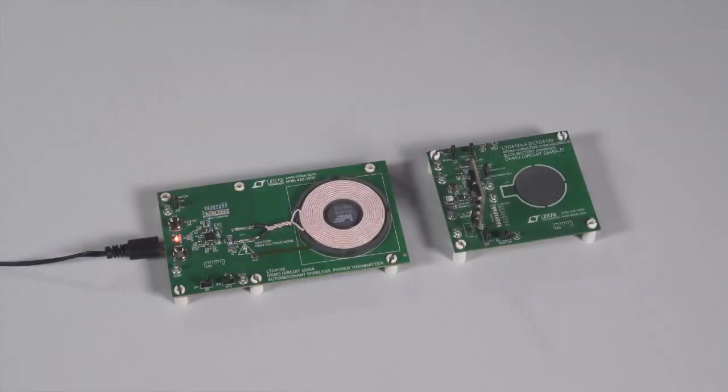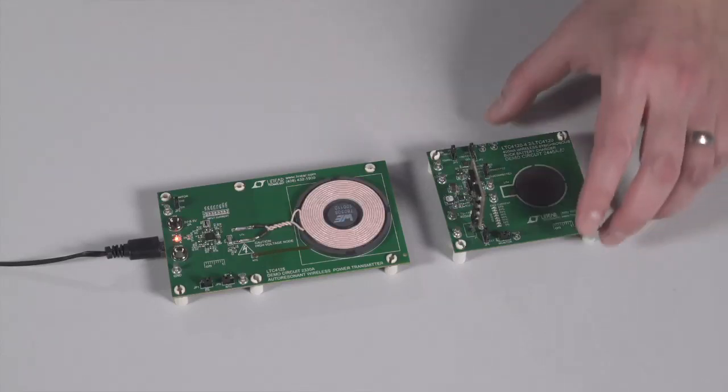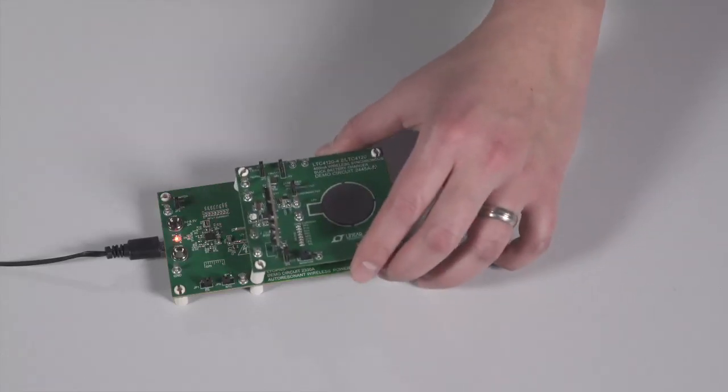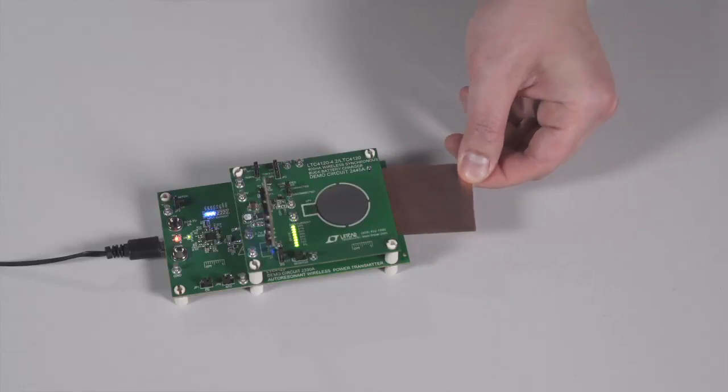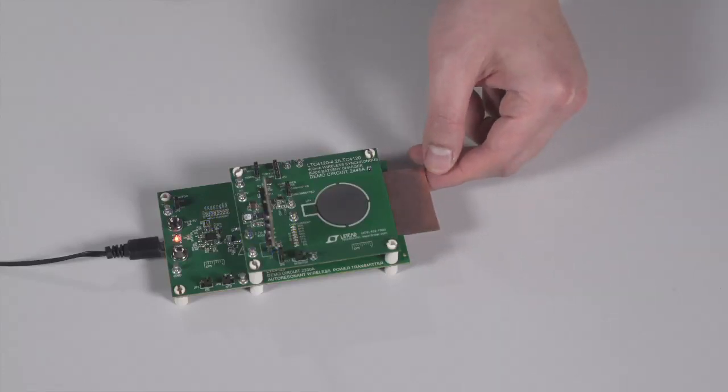Here, I am using the same LTC4125 transmitter plus LTC4120 receiver demonstration circuit as before. When I insert a conductive foreign object between the two coils, first the object will block some of the field from reaching the receiver. But as soon as a significant enough amount of field is blocked, the LTC4125 recognizes its presence and stops delivering any power at all, ensuring a safe wireless battery charger system.